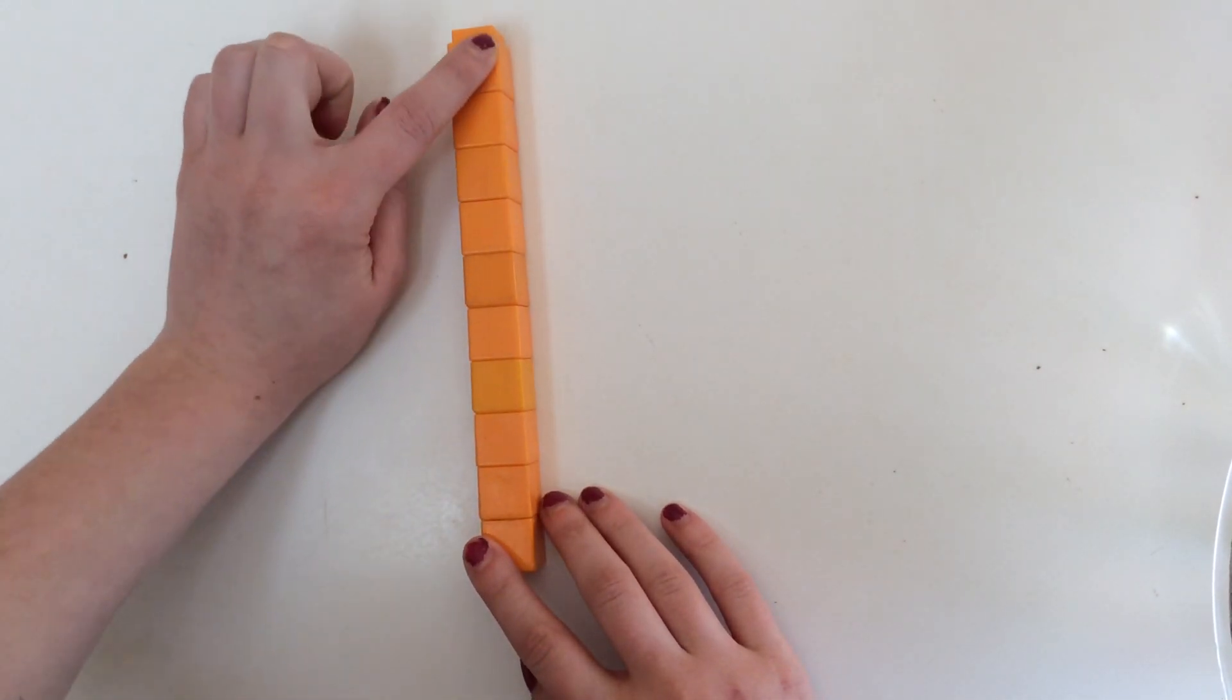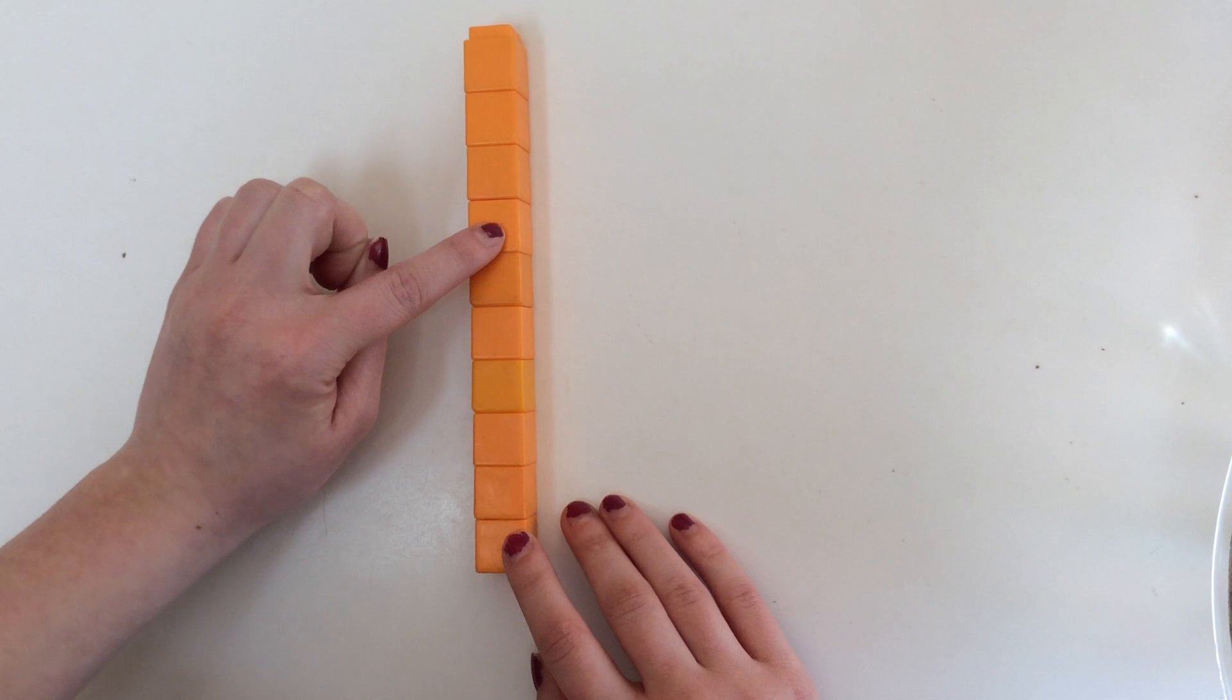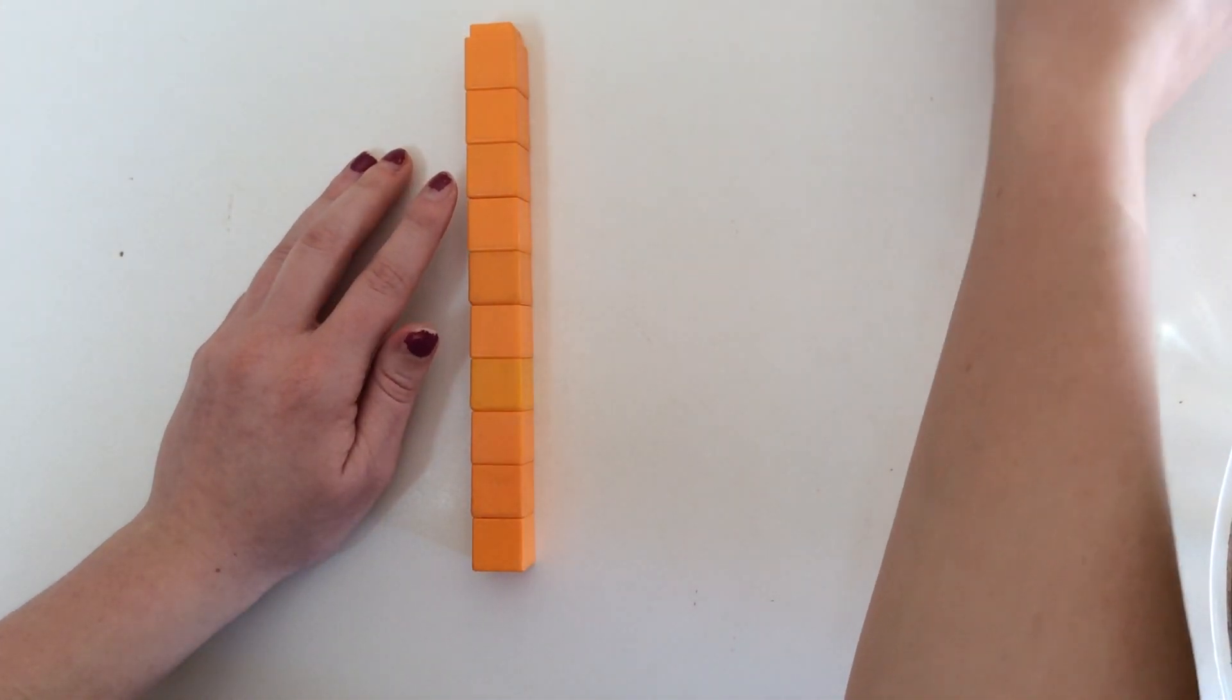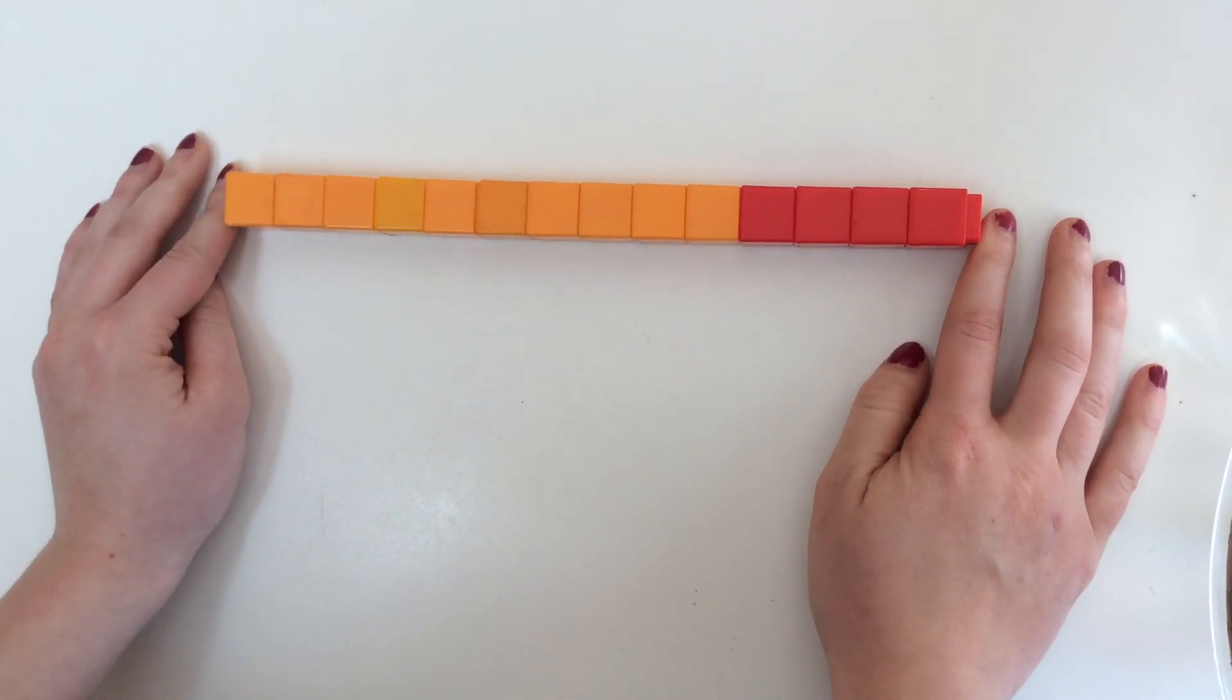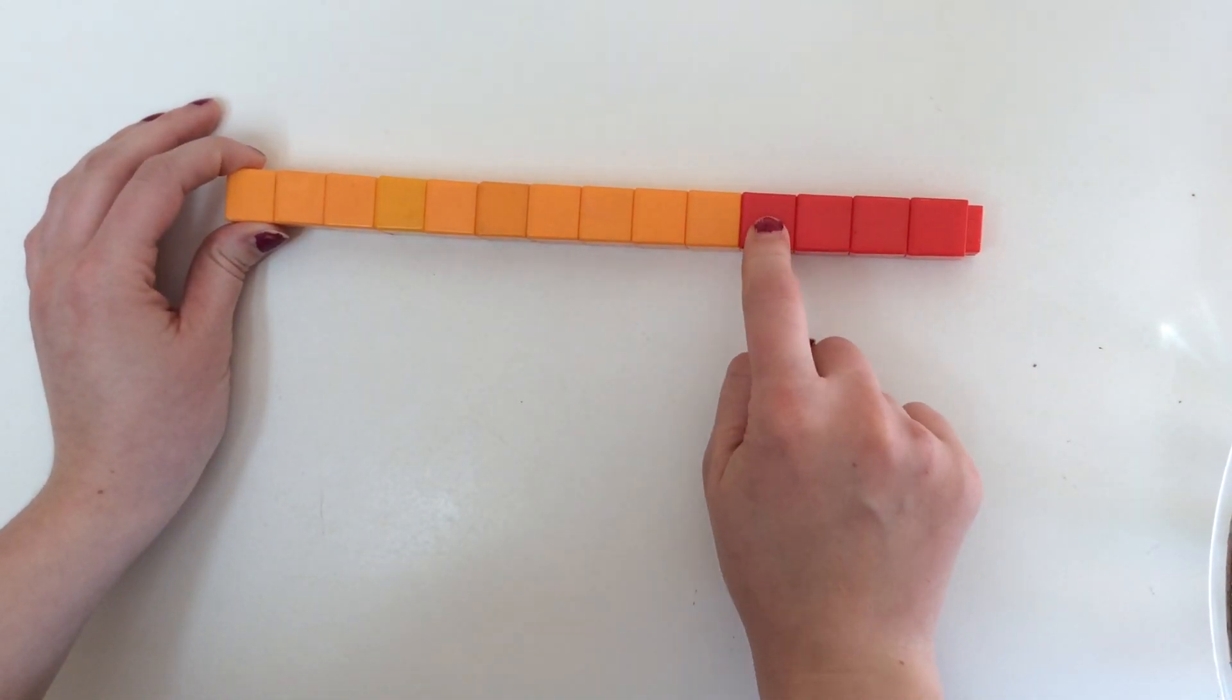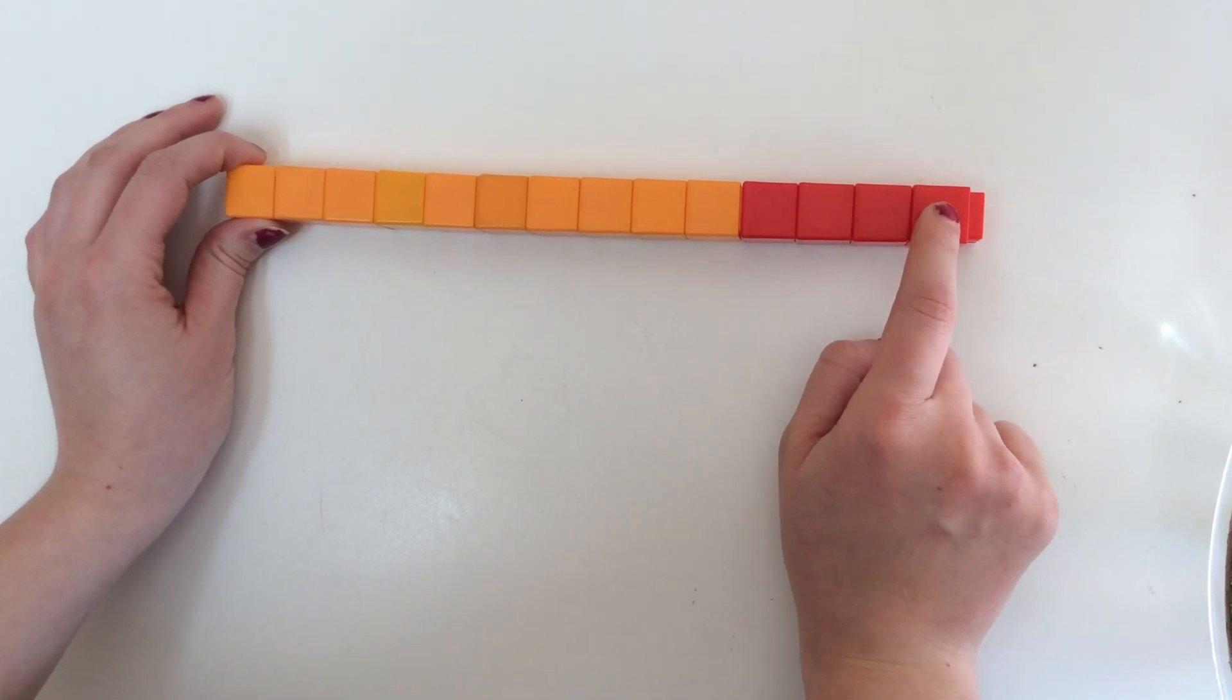So here I have 10 cubes: 1, 2, 3, 4, 5, 6, 7, 8, 9, 10. If I add 4 cubes here, how many cubes do I have? We know this is 10, 11, 12, 13, 14 cubes.